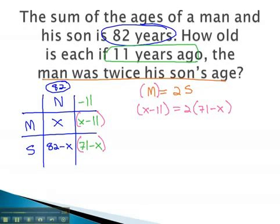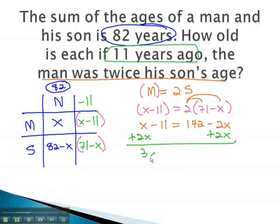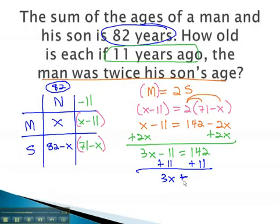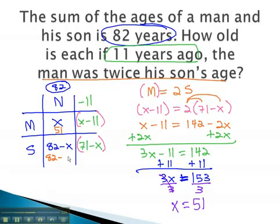This gives us an equation we can quickly solve for x. Start by distributing the 2 to get x minus 11 equals 142 minus 2x. Get the variable to one side by adding 2x to both sides: 3x minus 11 equals 142. Adding 11 to both sides gives us 3x equals 153. Dividing both sides by 3 gives us x equals 51. The man, or x, is 51. To find the son, we simply do 82 minus 51, and we get 31. The man is 51 and the son is 31.